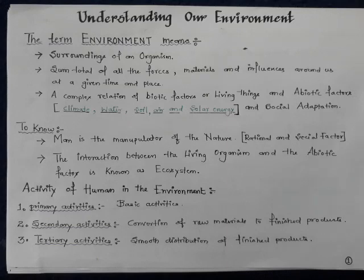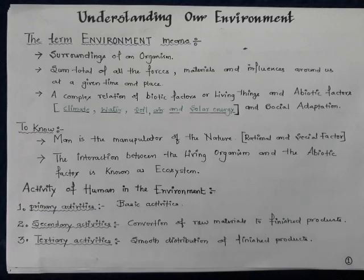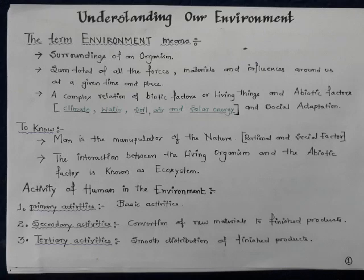If these factors do not support life, existence on the earth becomes difficult. Man has been meddling with both abiotic and biotic factors. As man is the super manipulator of nature, there are various activities of man that have adversely affected the environment — primary activities, secondary activities, and tertiary activities. Primary activity basically involves the production or creating of goods.